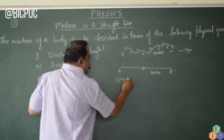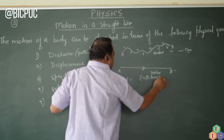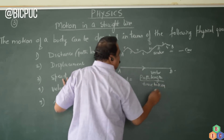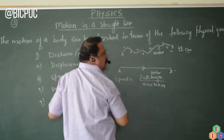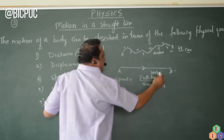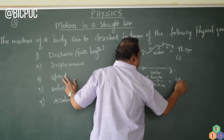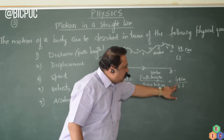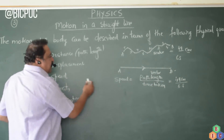What is the formula for speed? Speed is path length divided by the time taken to cover that path length. For example, if you add up all the distances and get 49 centimeters, and that 49 centimeters is covered in 6 seconds, then 49 divided by 6 gives you the speed.